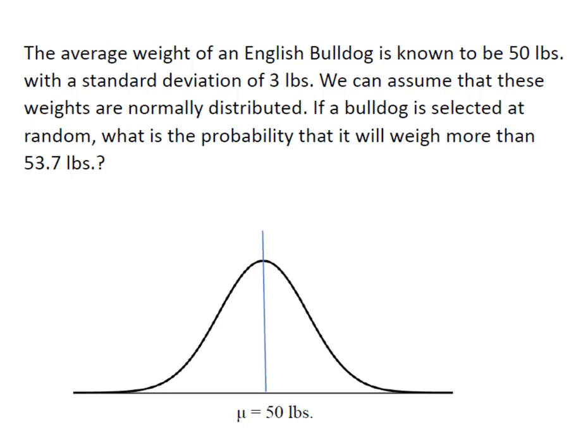The average weight of an English Bulldog is known to be 50 pounds with a standard deviation of 3 pounds, and we can assume that these weights are normally distributed. If a Bulldog is selected at random, what's the probability that it will weigh more than 53.7 pounds?